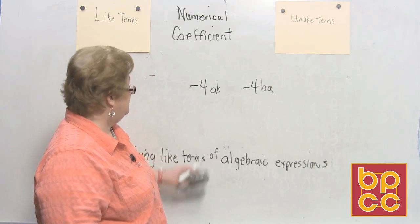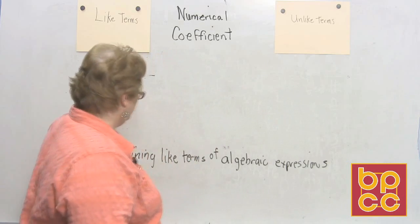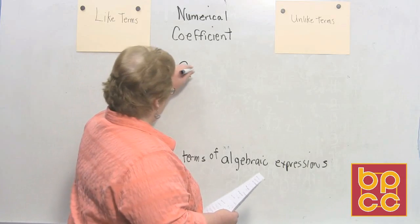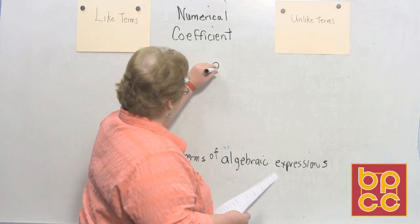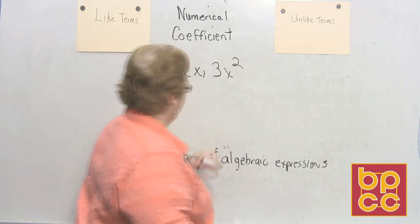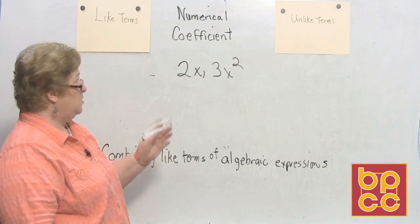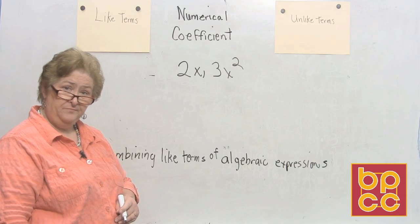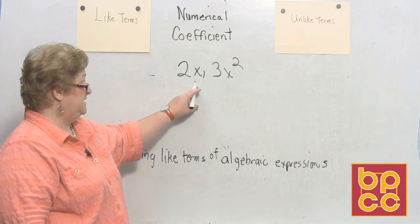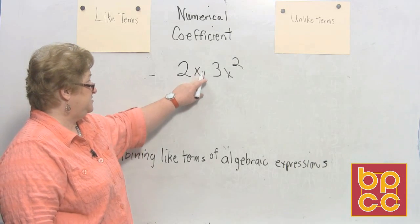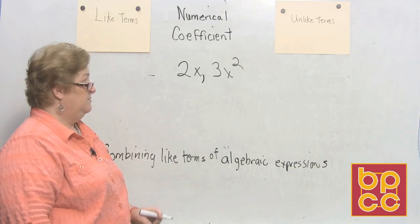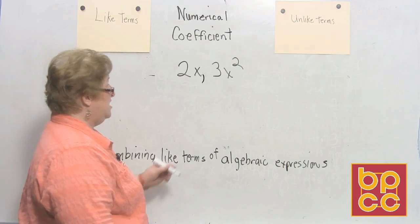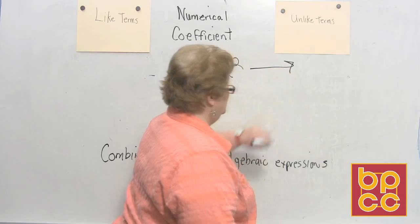Now let me put some up and we'll decide which category each goes under. My first one will be 2x and 3x squared. Should this go under unlike terms or like terms? Well, they both have x's, but one is x squared and the other is not. So we're going to have to go with unlike terms.